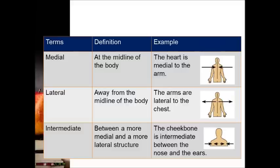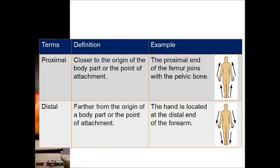Intermediate means between a medial and a lateral structure. For example, your cheek is intermediate between the nose and ears. Next, for proximal and distal, these terms are used to describe both upper and lower limbs. When the structure is closer to the point of attachment of either upper or lower limbs, it is proximal. When it is farther away, it is called distal.